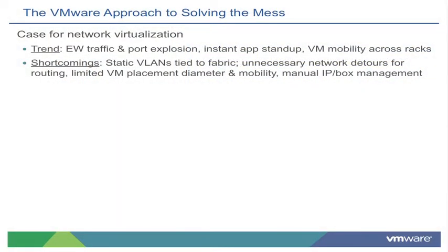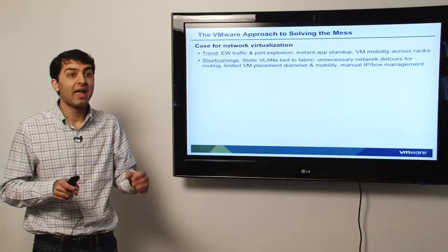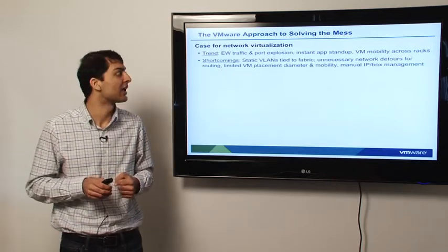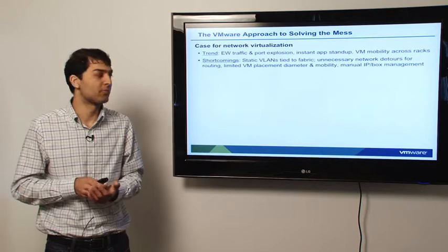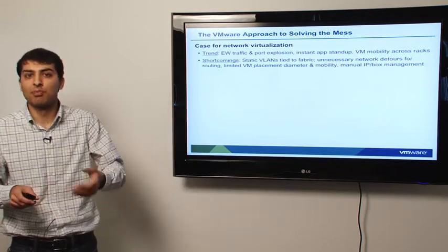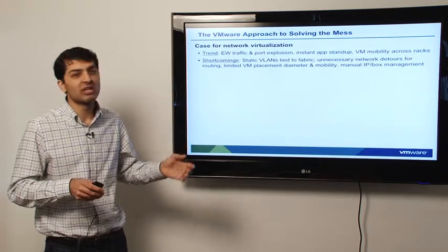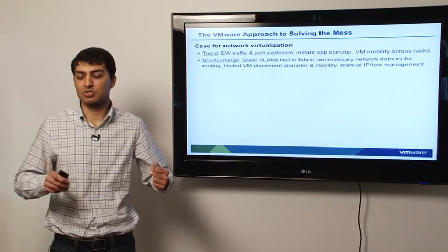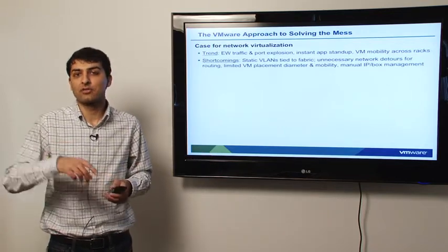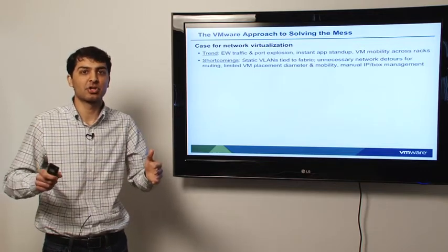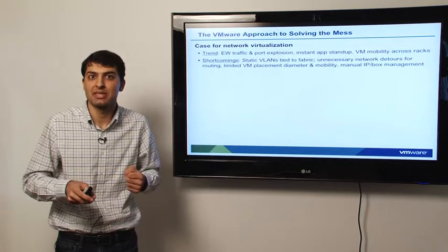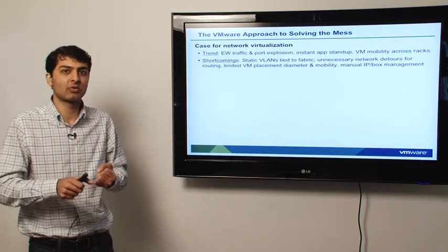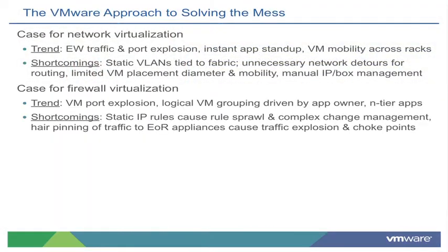Some of the shortcomings leading to the case for network virtualization: static VLANs are tied to the fabric, and each directly impacts your IP addressing or subnetting in your VMs, making IP address management undoable from an automation perspective. Similarly, VM placement, diameter, or mobility is crimped by this problem. There are also unnecessary network detours — when one VM sits right next to another physically, you shouldn't have to loop it through an end-of-row device just for firewalling. You should be able to do this at a micro-segmented level.